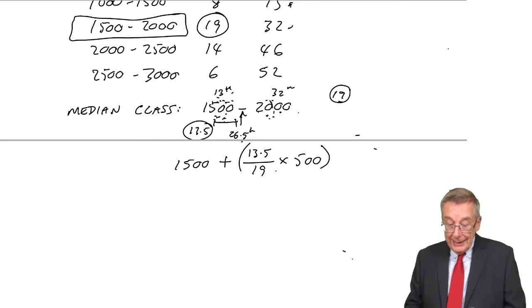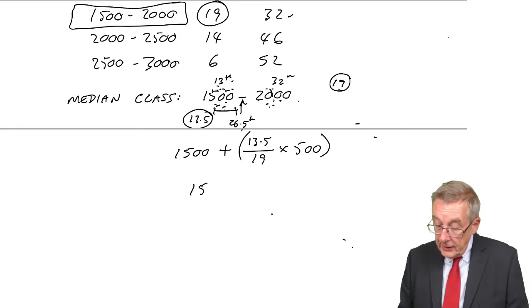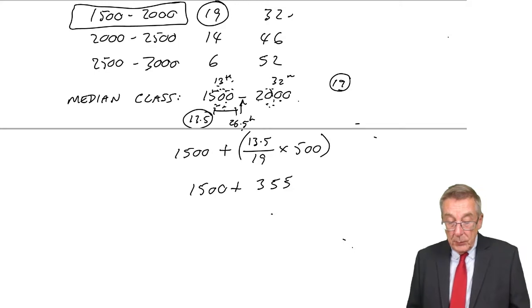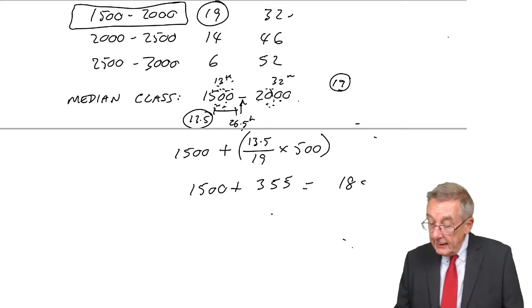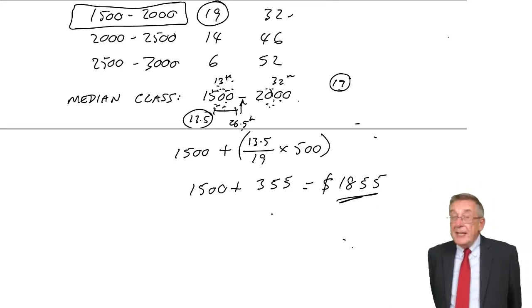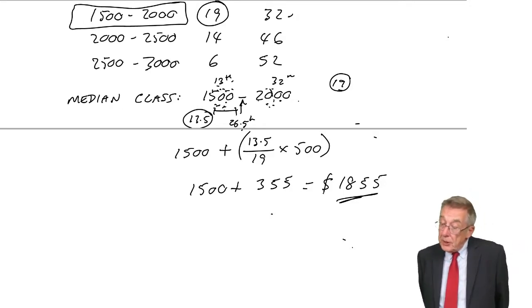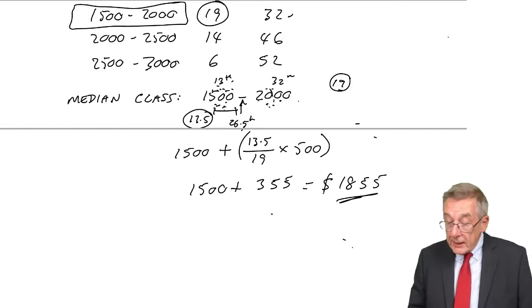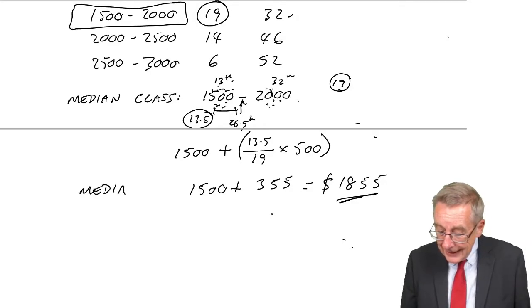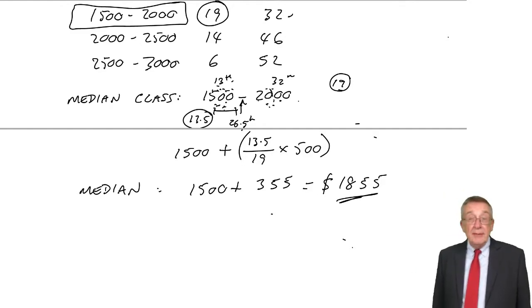And what do we end up with? 1,500 plus, it comes to 355, 0.26, it comes to 1,855. So, a bit messy. And as I say, do check carefully what's required. If it's the median class, well, you should have no problem. 1,500 to 2,000. But if you're actually required to put a figure on it, then, well, it's the point that we keep repeating, you look at 1855.